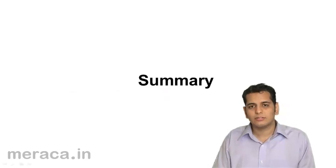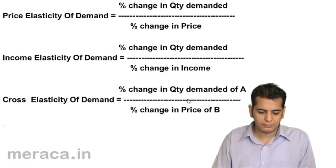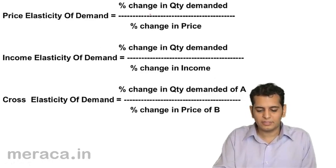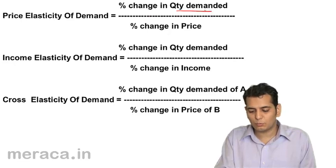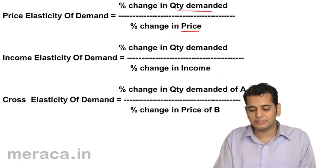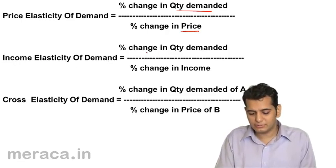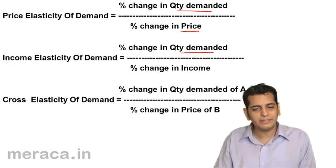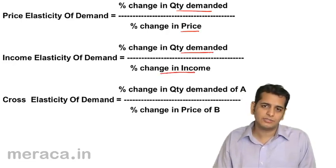Let's take a quick summary of the topic. Price elasticity of demand is calculated as percentage change in quantity demanded divided by percentage change in price. Income elasticity of demand is calculated as percentage change in quantity demanded divided by percentage change in income.